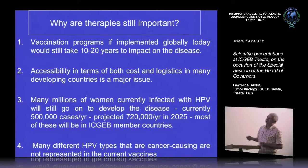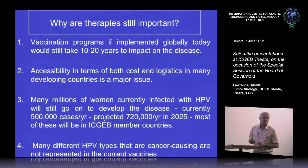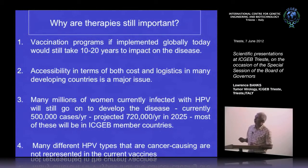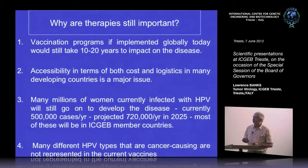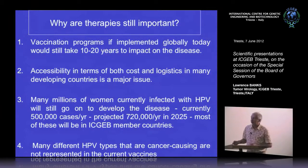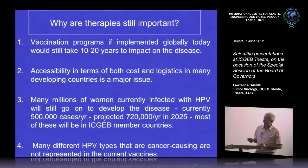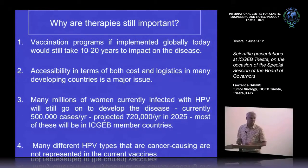We have major issues in terms of accessibility with respect to logistics and cost within most of the countries where this vaccine is really needed. It's also important to remember that the vaccine is a prophylactic, it's not a therapeutic. So of the millions of women that are already infected with papillomavirus, these will still go on to develop the disease. WHO projections indicate that this is going to increase dramatically over the next 10 years or so, and many of these cases will be within ICGB member countries. Additionally, these vaccines only really cover two of the different papillomavirus types, HPV16 and 18, and there are many other types that are also cancer-causing.